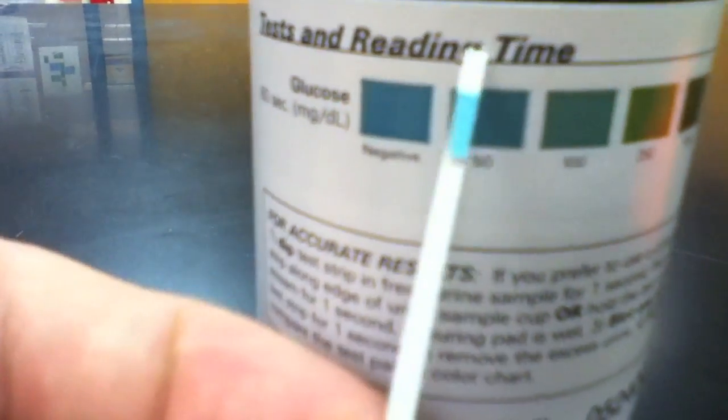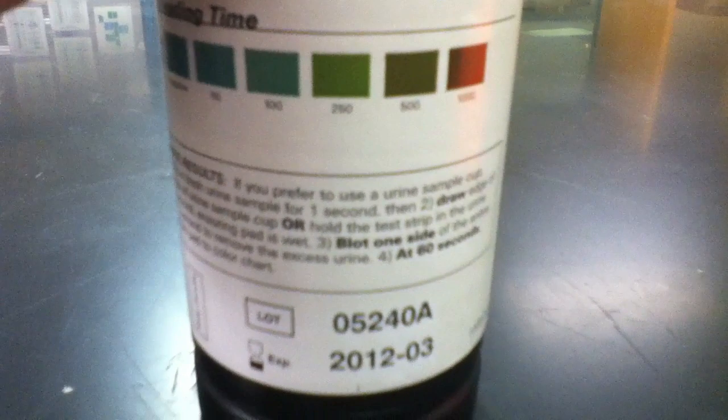The glucose test strips start as an aqua color. Using this colorimetric scale, we can determine the amount of glucose in milligrams per deciliter in each solution.